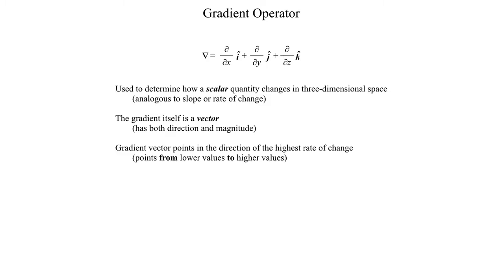A few things that should be noted about the gradient operator: it is often used to determine how a scalar quantity changes in three-dimensional space. You can think of this as being analogous to the slope or rate of change from algebra — how if you want to determine how quickly a function changes, you look at the slope or, once you get to calculus, the derivative of the function. The gradient operator extends that into three-dimensional space, allowing us to determine how quantities are changing in the x, y, and z directions all simultaneously.